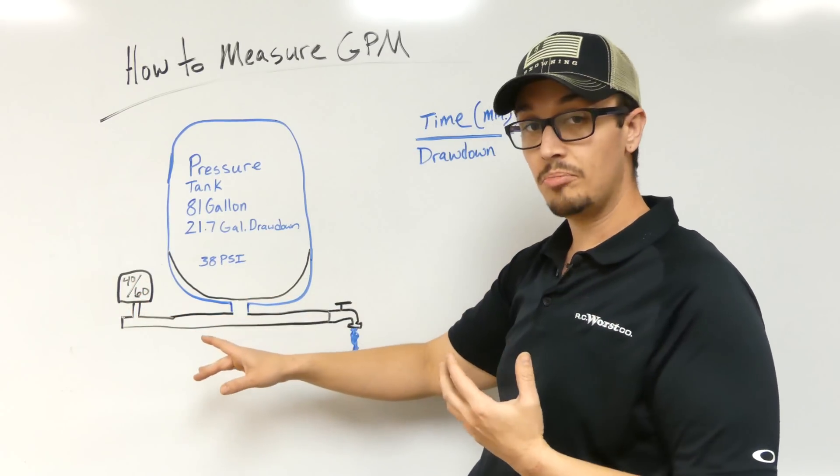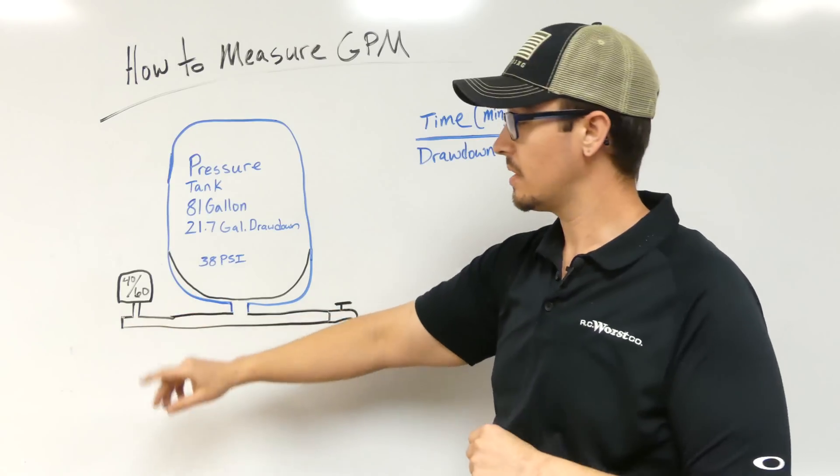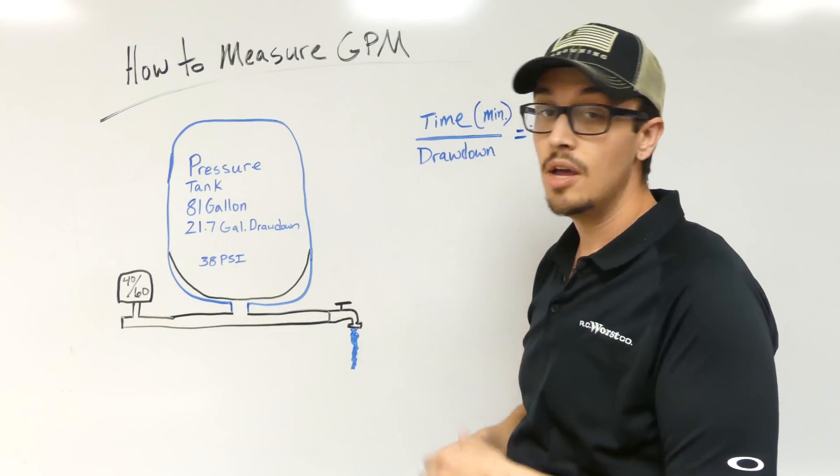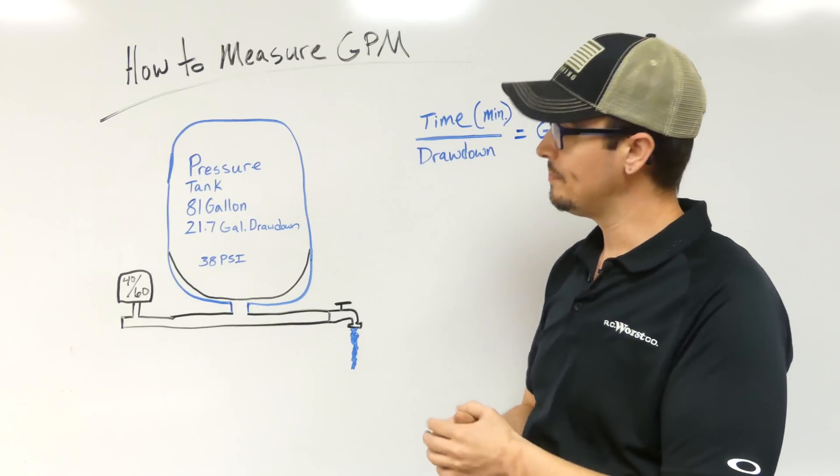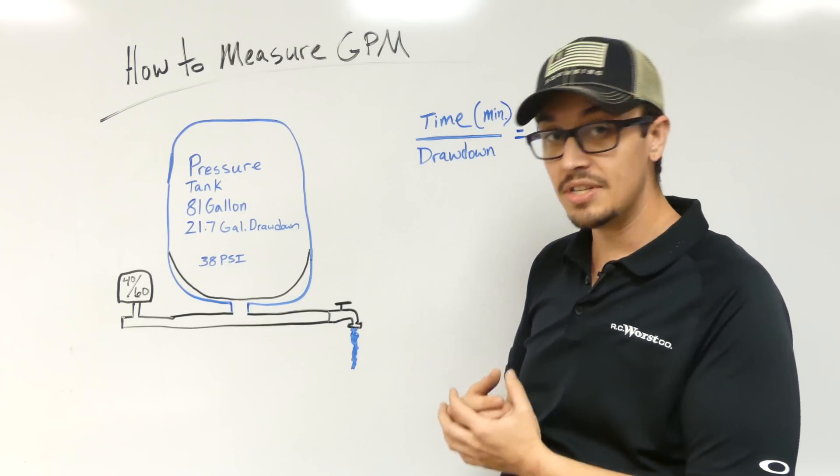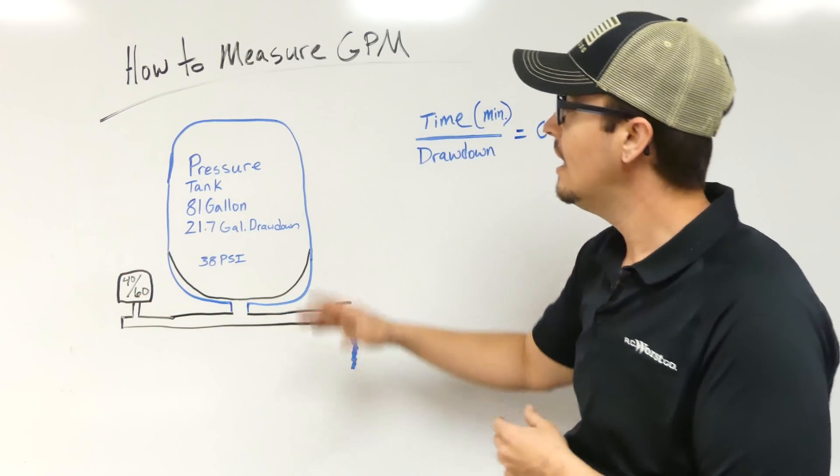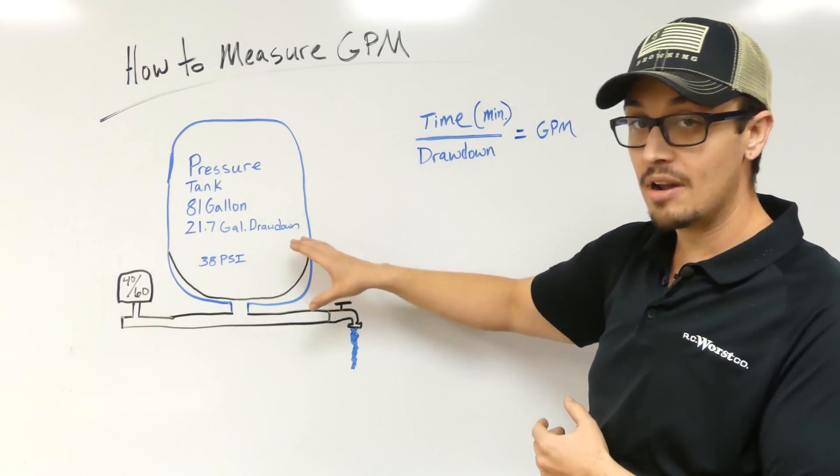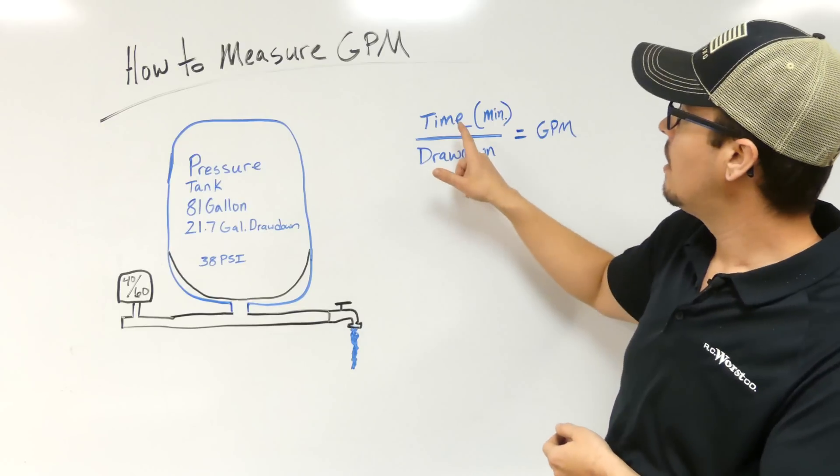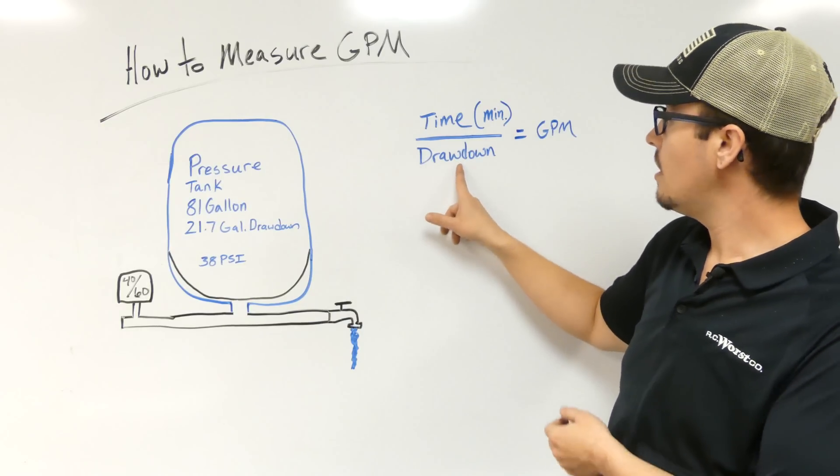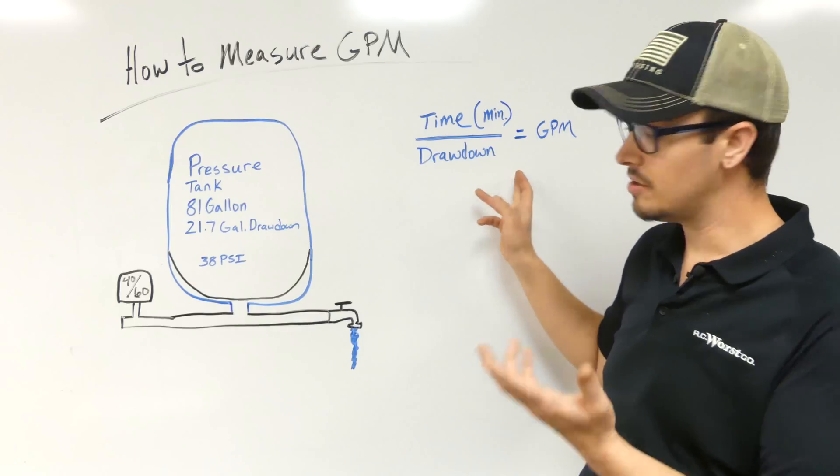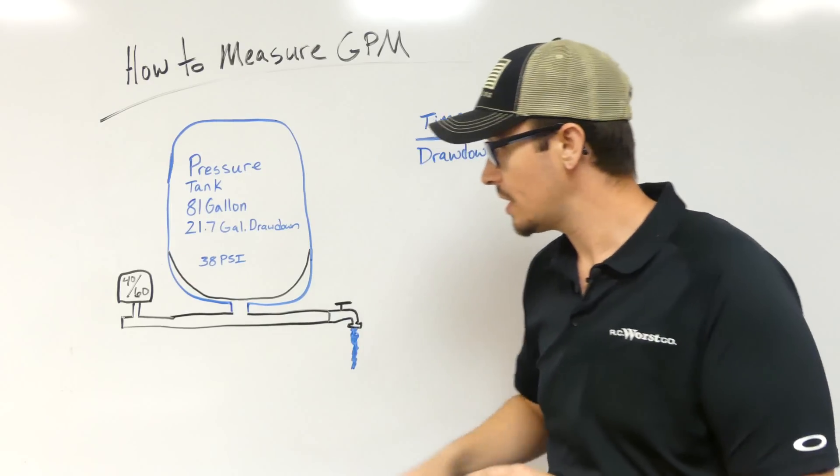Basically what we're going to do is drain everything down till the pressure switch kicks on. As soon as we hear the pressure switch kick on, we're going to start that stopwatch. We're going to measure how long it takes until that pressure switch opens again or turns off. When we get our time over our drawdown, that gives us our GPM.